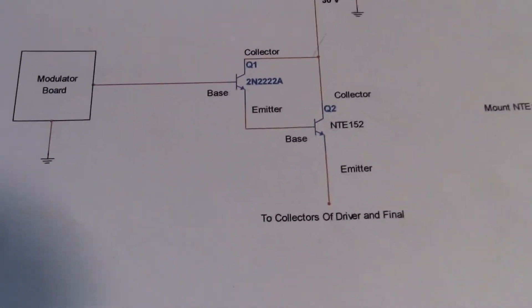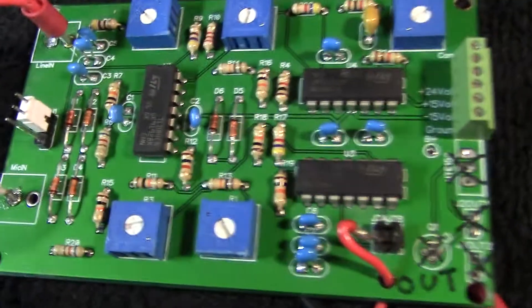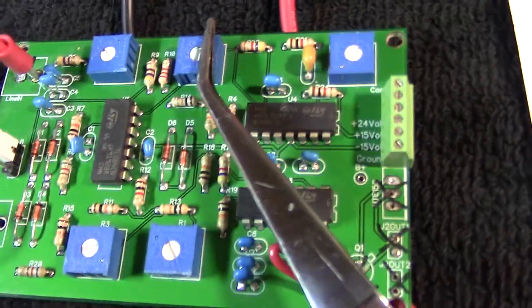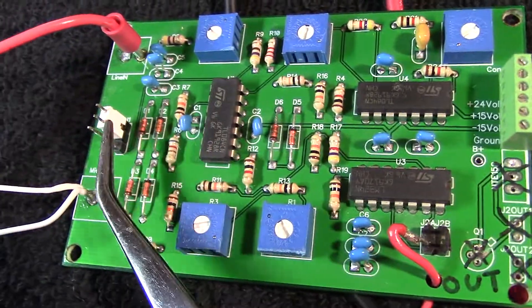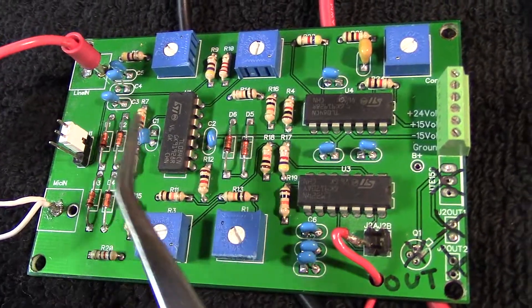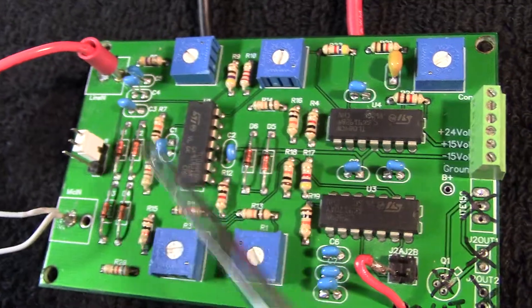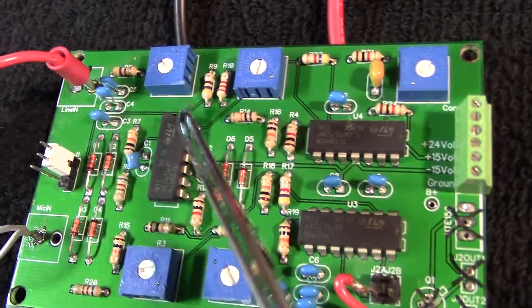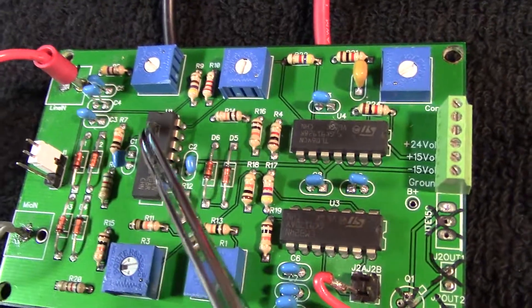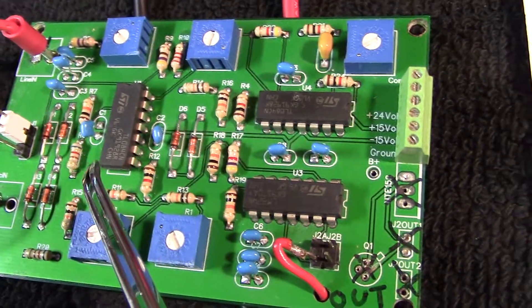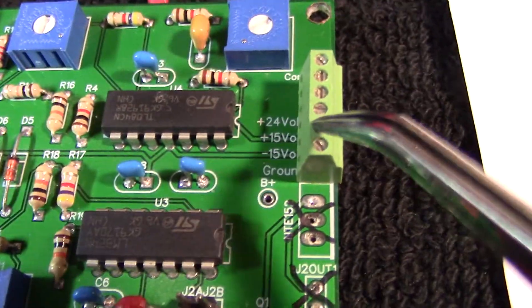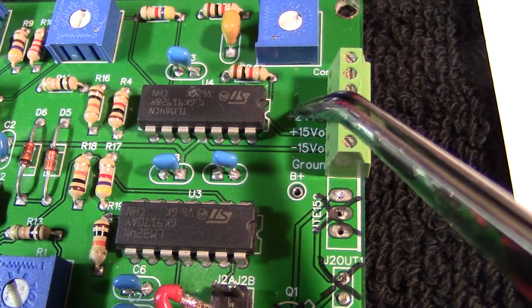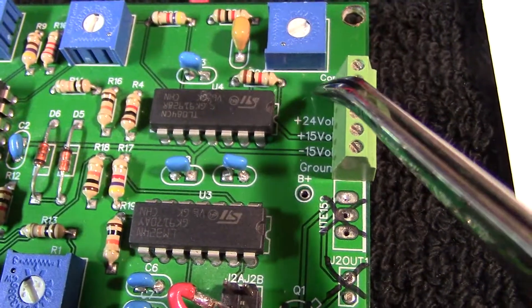We're going to talk about the power requirements of this board. This is the old design — the new board he has out now is half the size, it's surface mount, and it requires only two power supplies. This old board does require three, because of the devices used on this board. These devices here require two power supplies — a positive voltage and a negative voltage. These devices do come in single supply packages, like those used on the new design. But this one uses dual polarity — they're going to need a 24-volt power supply, or possibly 30 volts, and they're going to need a positive voltage and a negative voltage power supply.